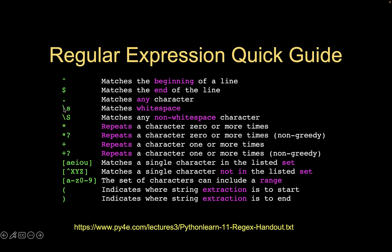The backslash-s is an escaped character that matches any whitespace character, including space, tab, and newline. Backslash capital-S matches any non-whitespace character, which includes all alphabetics, numerals, punctuation, emojis — any non-whitespace character. The asterisk is a modifier: you put it on the right side of an expression and it repeats that expression zero or more times. For instance, dot-asterisk means 'match any character zero or more times.'